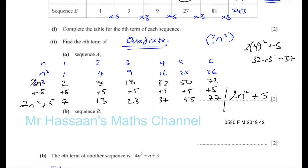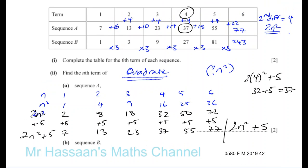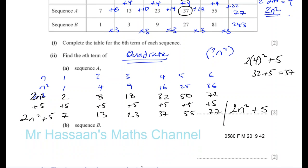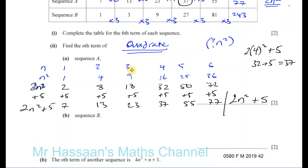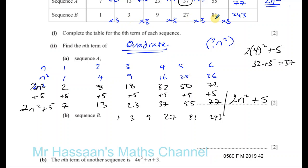Part B: sequence B, which is 1, 3, 9, 27, 81, and 243. We said we have to multiply by 3 each time. When you multiply by the same number each time, it's called an exponential or geometric sequence. It's always going to be in the form of the number you're multiplying by — called the common ratio — to the power of something.